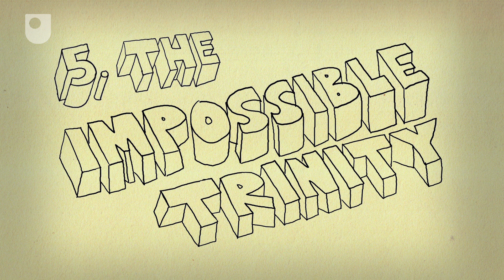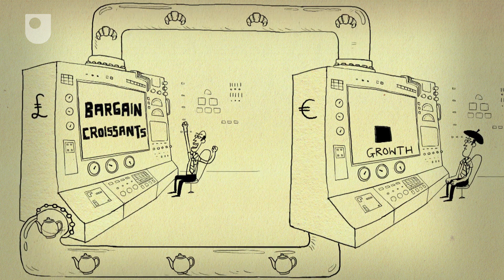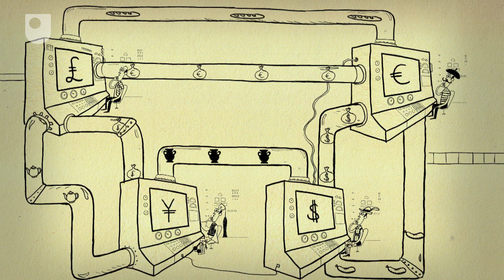Number 5. The impossible trinity. Most countries trade with one another, which is usually pretty good for all involved. But it does mean it's a bit harder for each to keep control of its own finances.